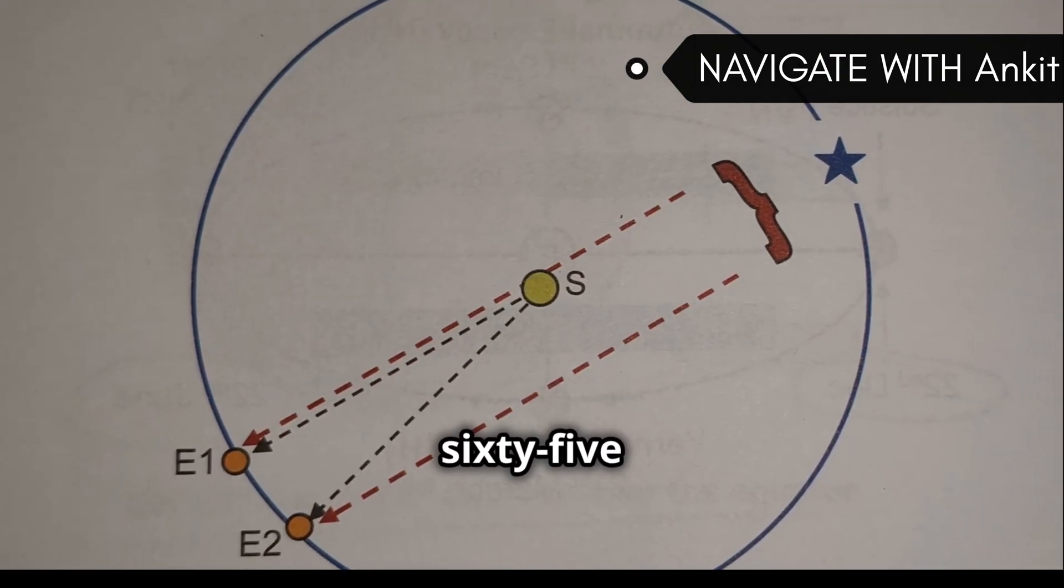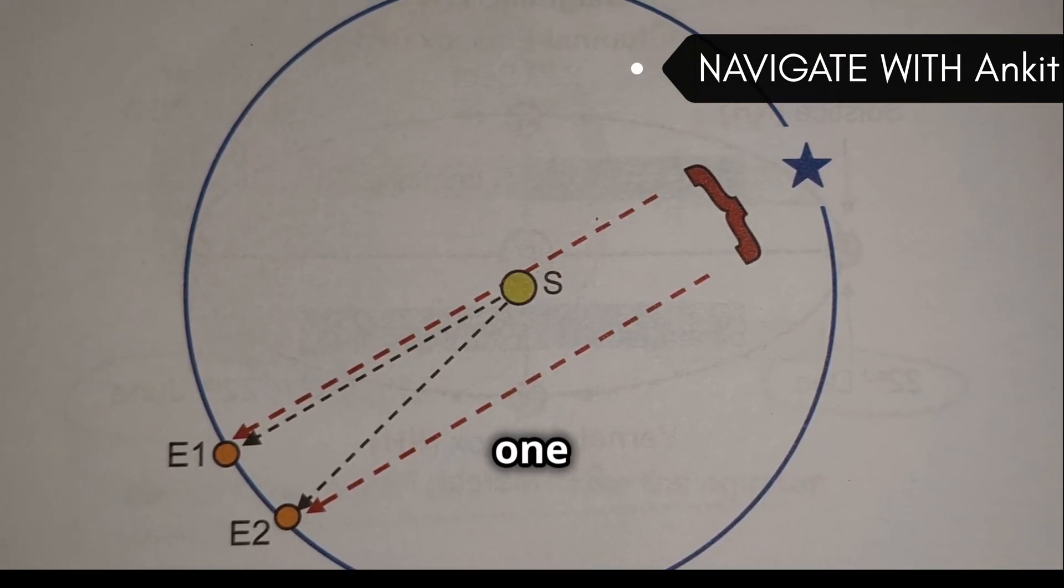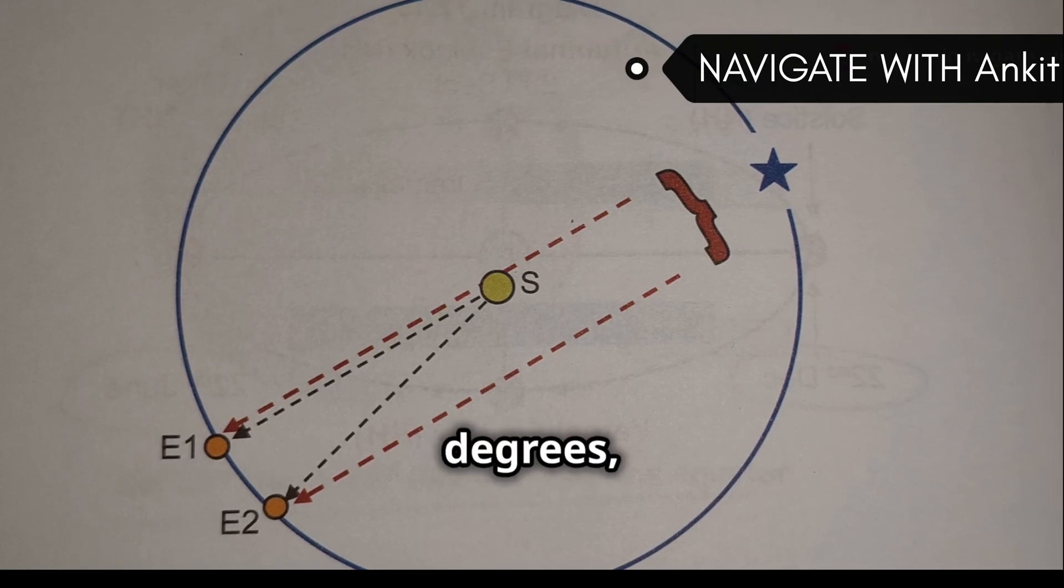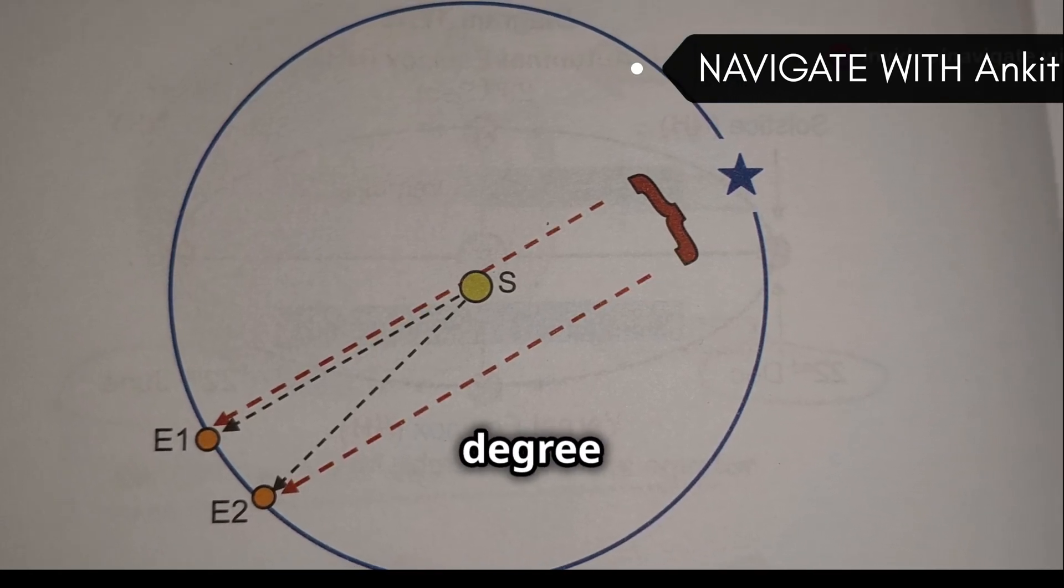Since it takes 365 days for the Earth to complete one full orbit of 360 degrees, it moves about one degree each day.